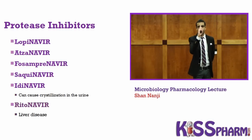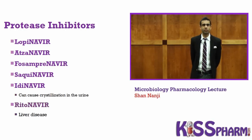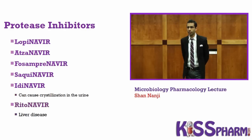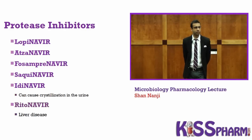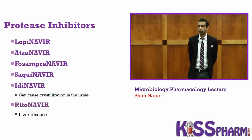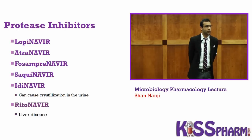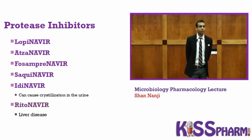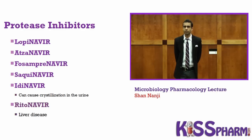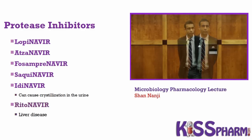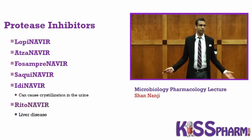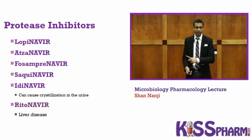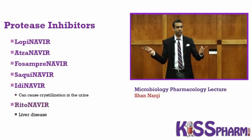Among the protease inhibitors, I just need to know the first letter. One can cause crystallization in the urine, another can cause liver failure. In alphabetical order, I comes before R — so I-navir causes crystallization, and R-navir causes liver failure.